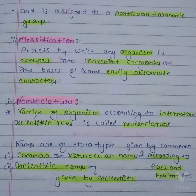Classification is the process by which any organism is grouped into a convenient category on the basis of easily observable characters. Easily observable characters means characters which anyone can easily observe.